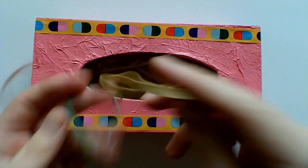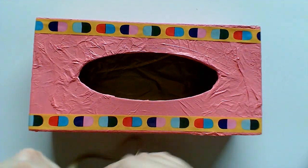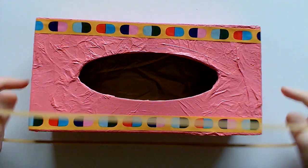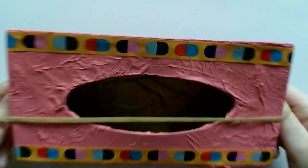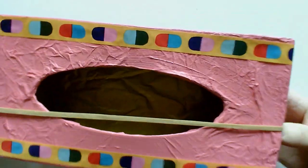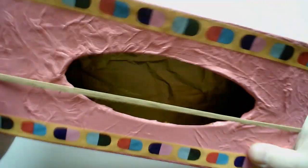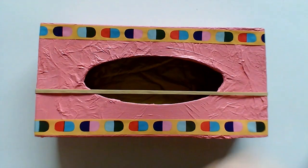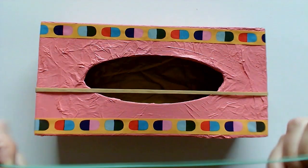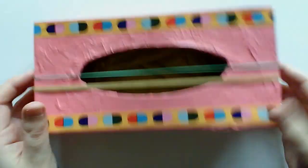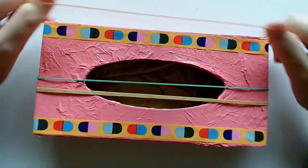Next, take your three elastic bands and you just want to pull them taut over the hole in the tissue box. Make sure that your elastic bands are the right size, otherwise they might break or be too loose.